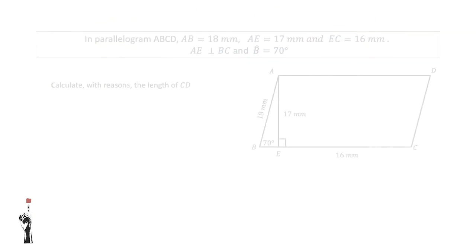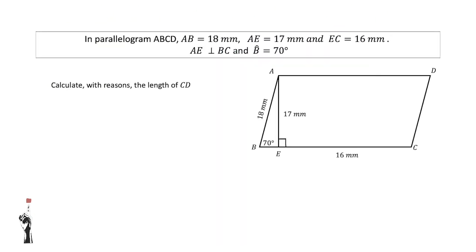Let's have a look at the first problem. In parallelogram ABCD, AB is equal to 18 mm, AE is equal to 17 mm, and EC is equal to 16 mm. AE is perpendicular to BC, which means that this angle is a 90-degree angle. Further, they say that angle B is equal to 70 degrees.